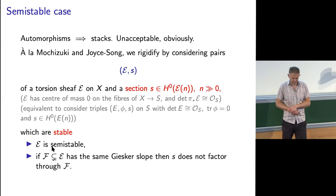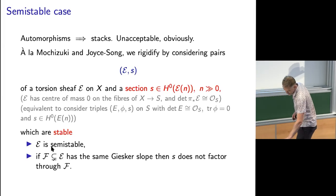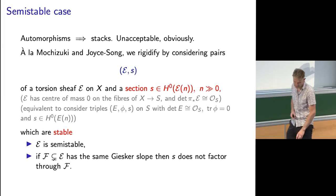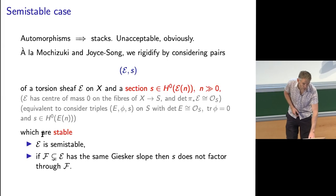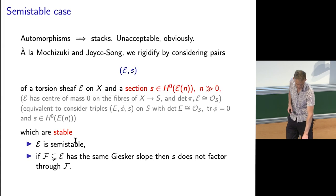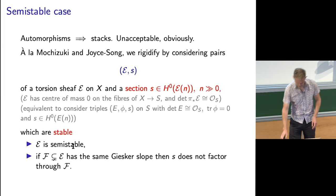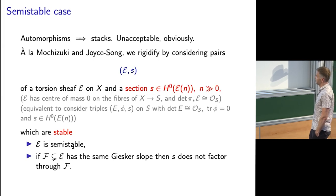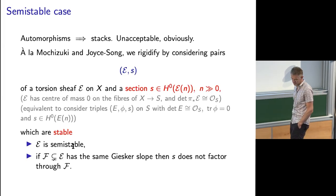There's a stability condition: E is semi-stable, and any destabilizing sub-sheaf... if you pick a sub-sheaf of E which has the same Gieseker slope — so it semi-destabilizes — then the section should not factor through it.